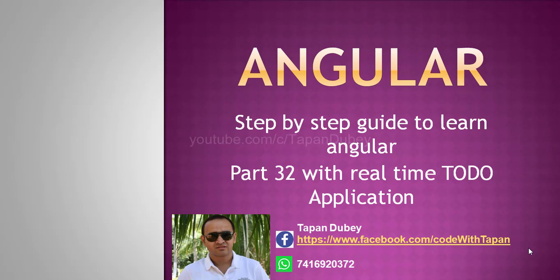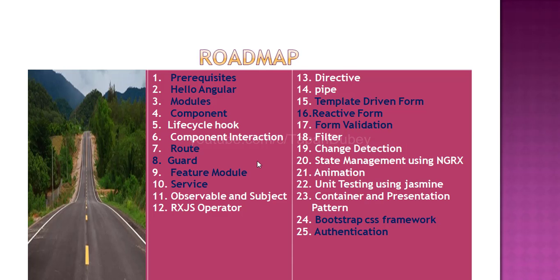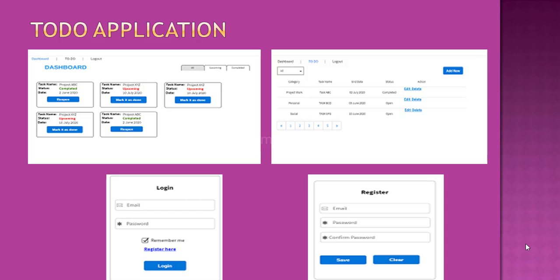Hello and welcome to my YouTube channel. This is part 32 of the step-by-step guide to learn Angular. If you are directly coming to this video, I recommend that you watch the previous video first. In this video, we are working on a PrimeNG table and we will add sorting and filtering. Let's open Visual Code and get started.